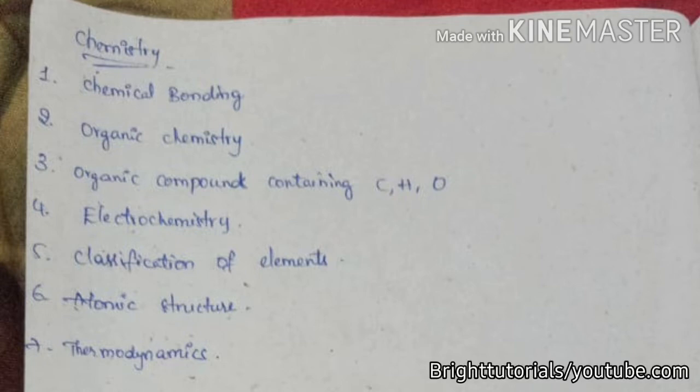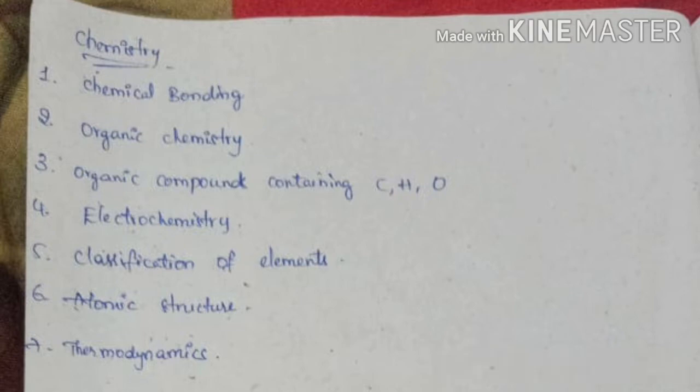Number three, organic compounds containing CHO - carbon, hydrogen and oxygen, electrochemistry, classification of elements, atomic structure and thermodynamics. These are the important chapters of subject chemistry.